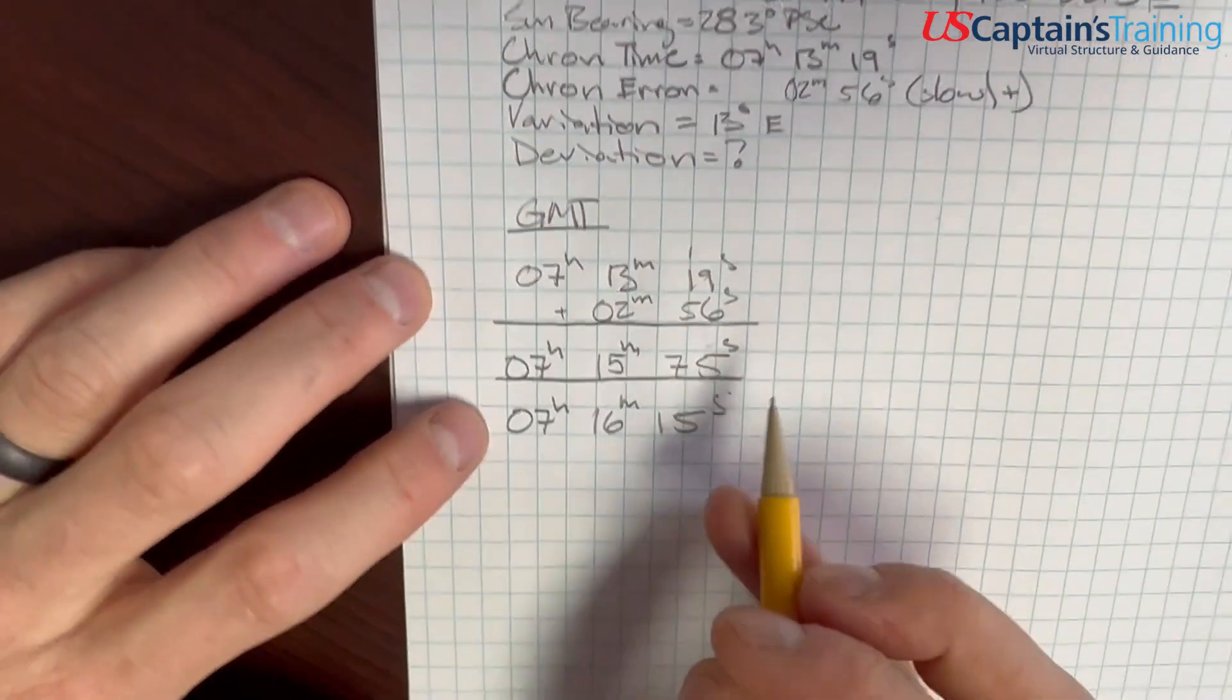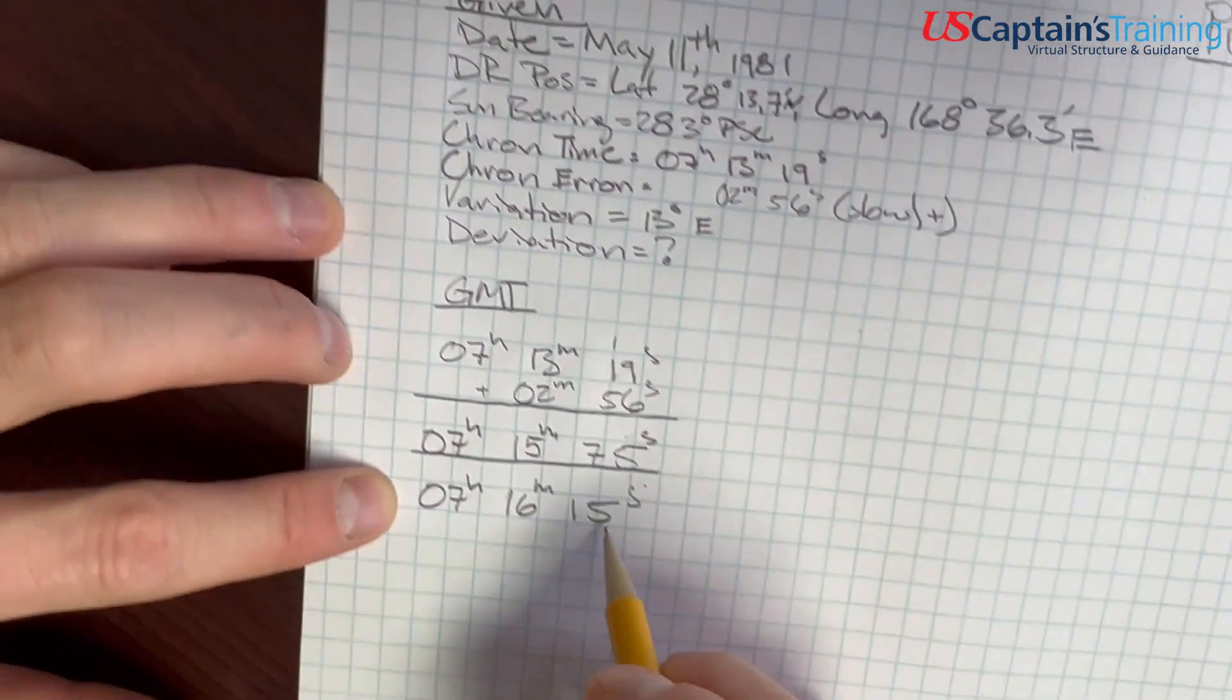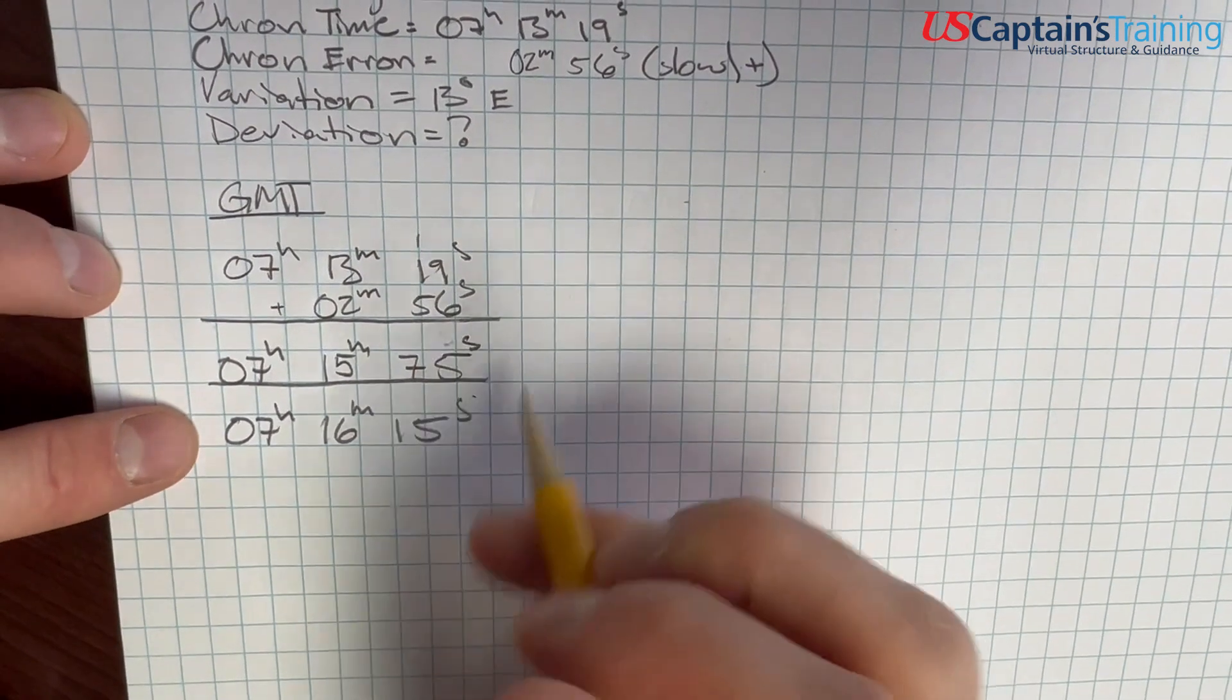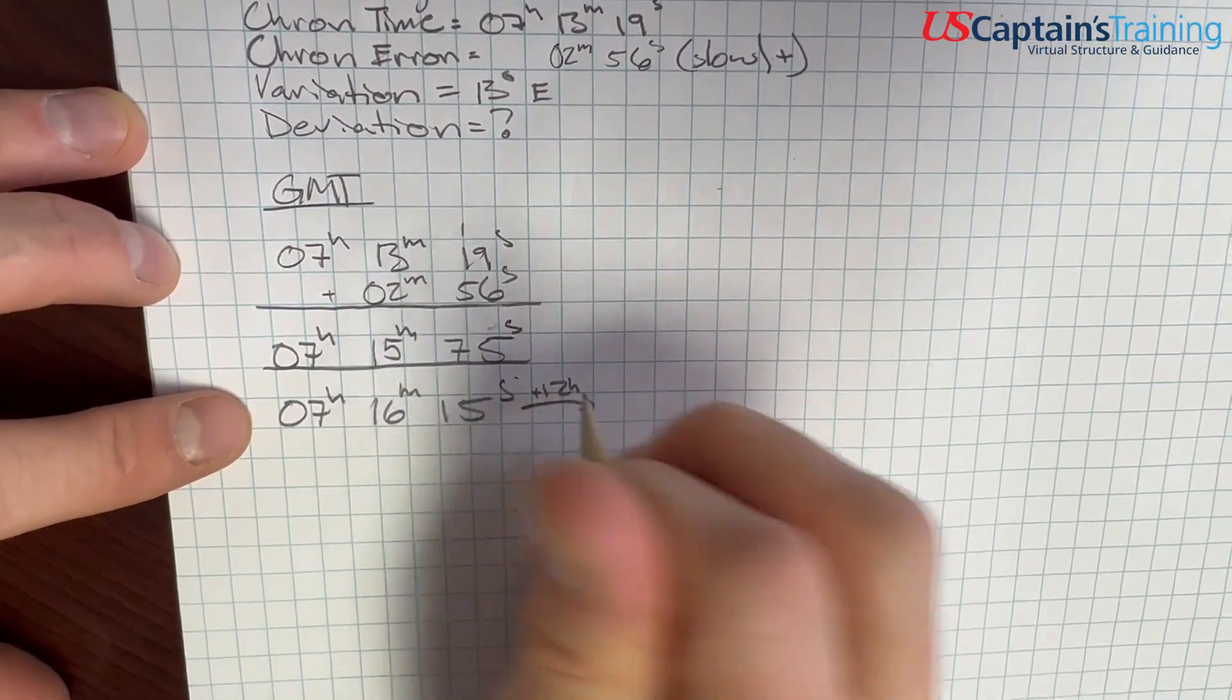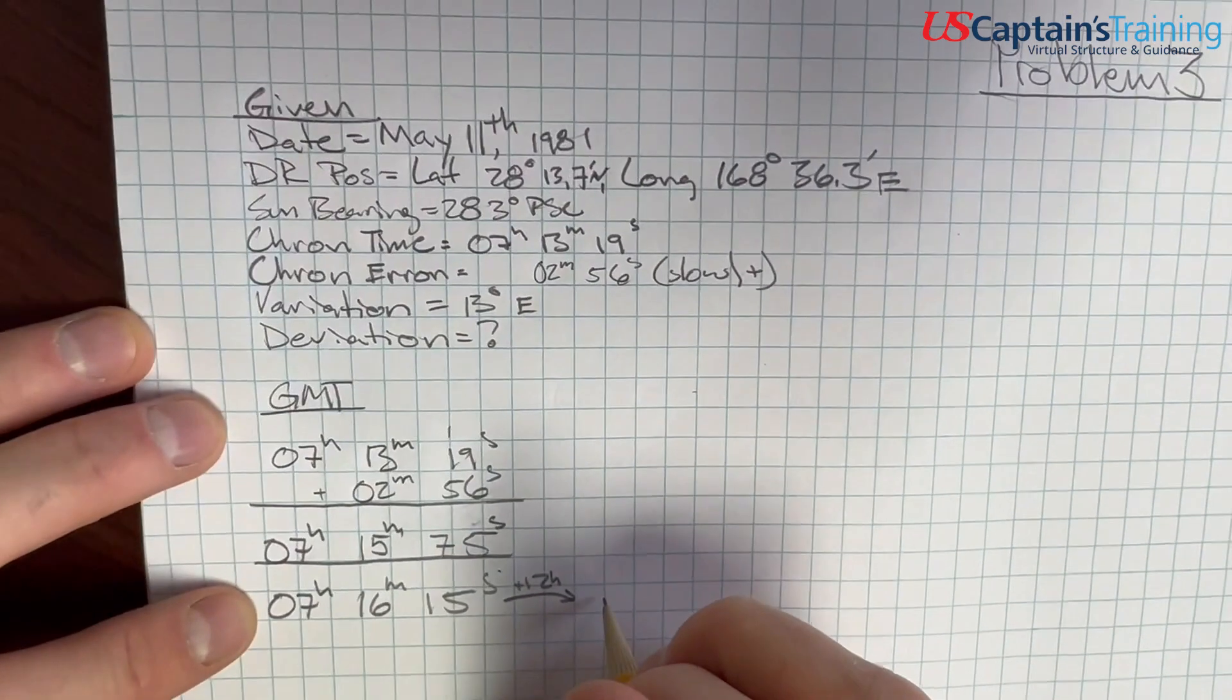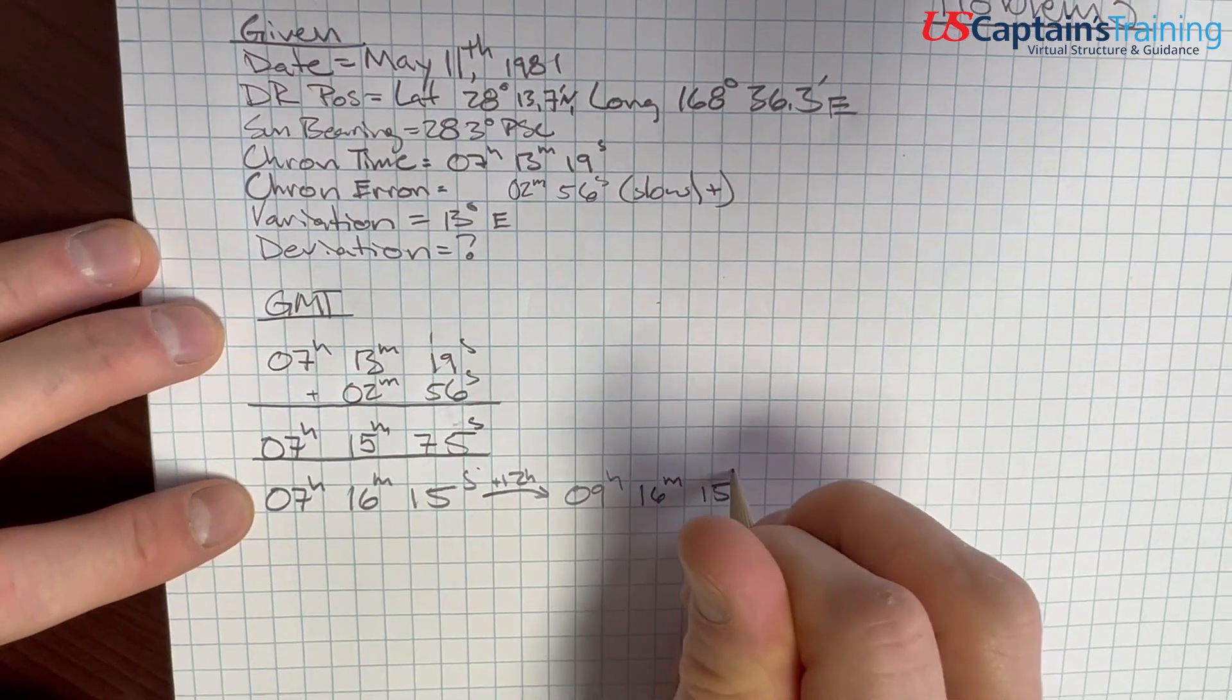Now there's ambiguity in the chronometer. There's only 12 hours in the chronometer, so it goes around twice in a day. It's essentially AM and PM. So if we add 12 hours to this, we get the other side of this thing. 7 plus 12 is 19, so the other side is 19 hours 16 minutes 15 seconds. And we have to figure out which one of these to use.